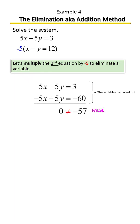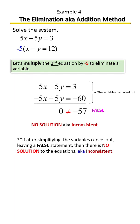So whenever the variables cancel out, it leaves you with a false statement because this is a false statement. Zero is not the same as negative 57. When it leaves you with a false statement, then that means there's no solution. Again, after simplifying, if the variables cancel out and leave you with a false statement, then there is no solution to the equations.